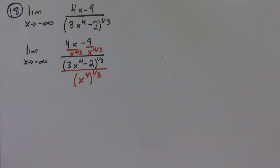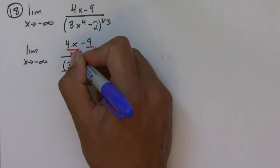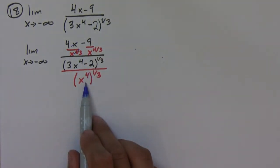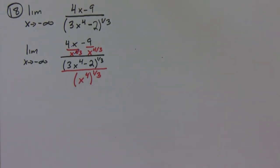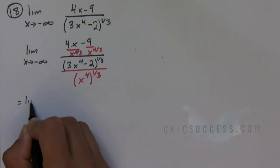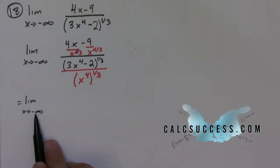Now these simplify and I'm left with x to the one-third in the denominator. These have the same exponent so I can bring the x to the fourth inside without a problem this time.